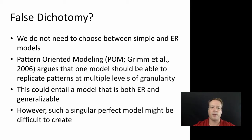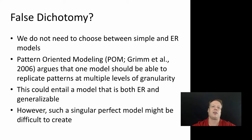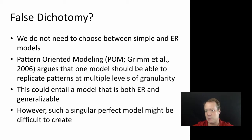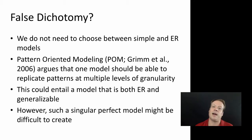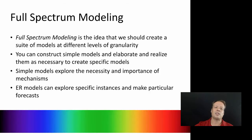There's a great paper by Grimm and colleagues where they argue that one model should be able to replicate different levels of granularity, and if it does, that's a good indication the model is actually telling us something true about the way the world works. This could entail a model that is both elaborate and realistic but also simple and generalizable. But such a singular perfect model might be difficult to create, so we actually espouse something called full-spectrum modeling.